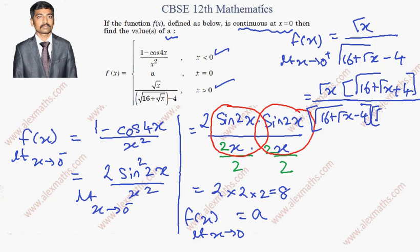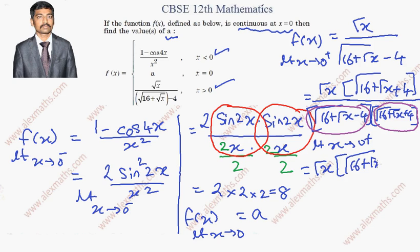In the denominator what happens is it is of the form a plus b times a minus b, so totally this is a square minus b square form. So we have to keep writing limit extending to 0 plus. The numerator we will keep it as it is: root x times root of 16 plus root x plus 4.